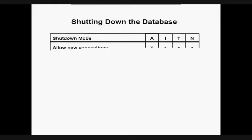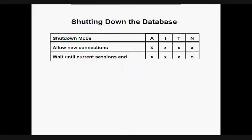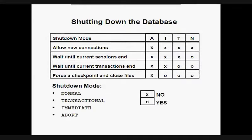SHUTDOWN TRANSACTIONAL prevents clients from losing work. In a transactional database shutdown, no client can start a new transaction on this particular instance. A client is disconnected when the client ends a transaction that is in progress. When all transactions are finished, a shutdown immediate occurs. The next startup does not require instance recovery.